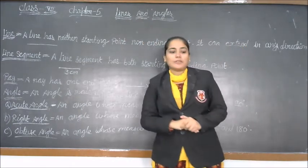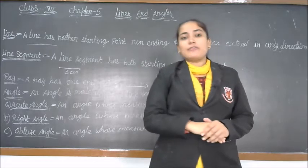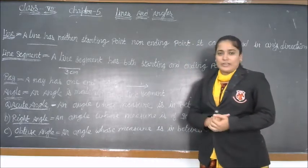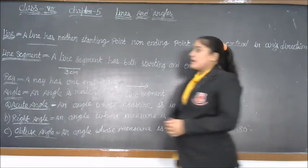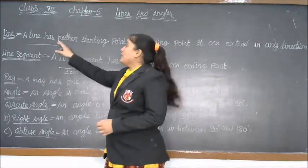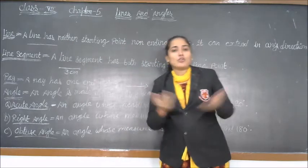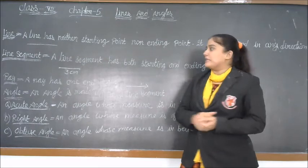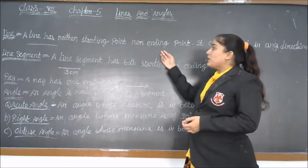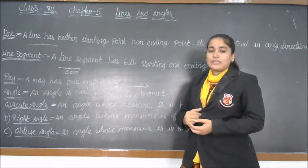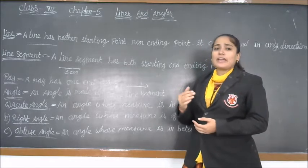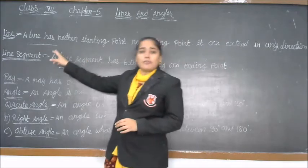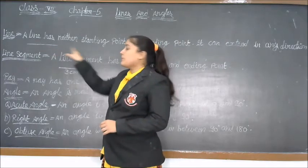In this chapter, we have to study about different types of figures and different types of concepts based on it. First we will start about line. A line has neither starting point nor ending point, means we can extend it in any direction. We can extend from the right side also.